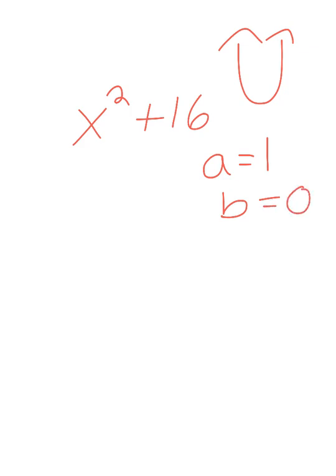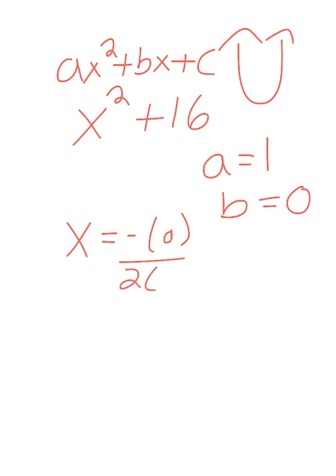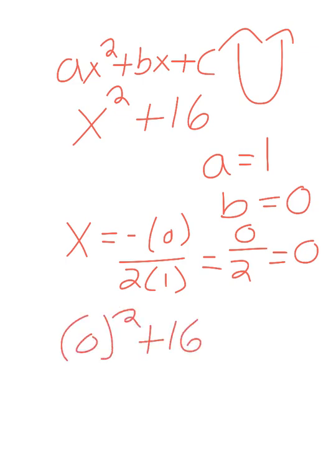Final example. Let's say I have X squared plus 16. Once again, I'm finding the vertex. This has a minimum. I know A is 1 and B is actually 0. Remember, it's AX squared plus BX plus C. But we don't have a B, so B is 0. I have X equals the opposite of B all over 2 times A. The opposite of 0 is still 0. So I have 0 over 2, which is 0. Then I'm going to take that and put it back in. I have 0 squared plus 16.